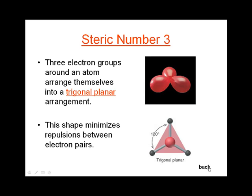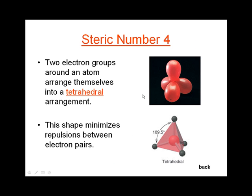When the steric number is four, those four electron groups will adopt a so-called tetrahedral arrangement. A tetrahedron has four vertices and four sides. So whenever you have four electron groups, they will arrange themselves in space into a tetrahedral form. Keep in mind that at this point we're only discussing electron groups — we haven't specified whether they are bonding or non-bonding. If there are four groups, those four groups will arrange themselves into a tetrahedral shape.